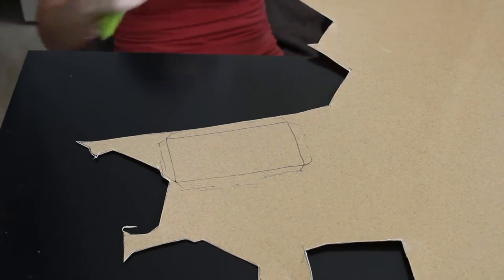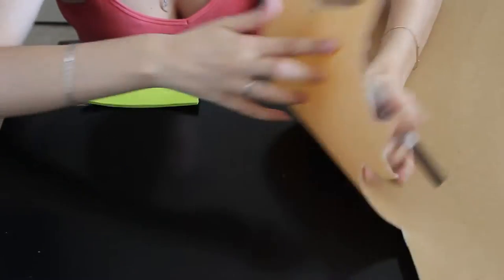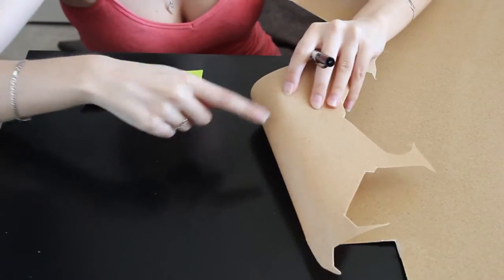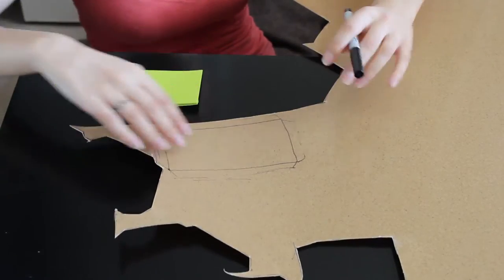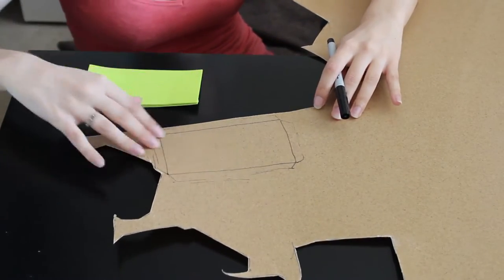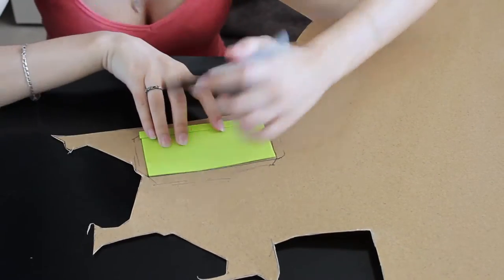First step is to take a look at your worbla and you'll notice that there is a shiny side and a not so shiny side. I like to draw on the shiny side because that's the side that has the glue on it. Lay your worbla down on the table, put your shape on it, and trace around it.